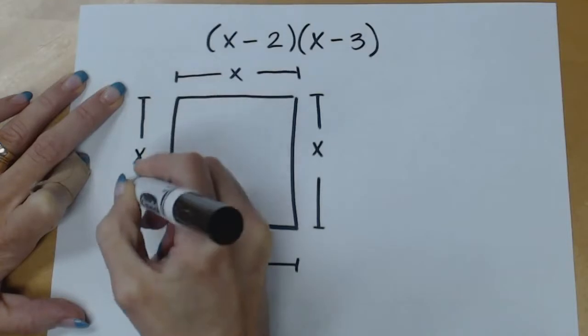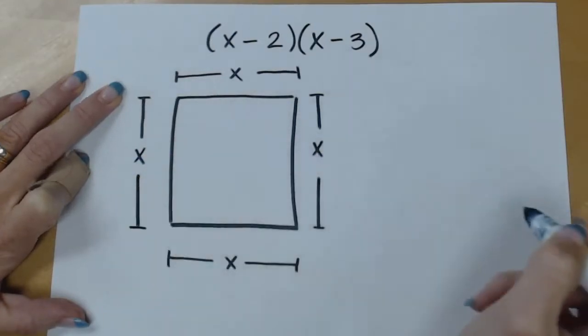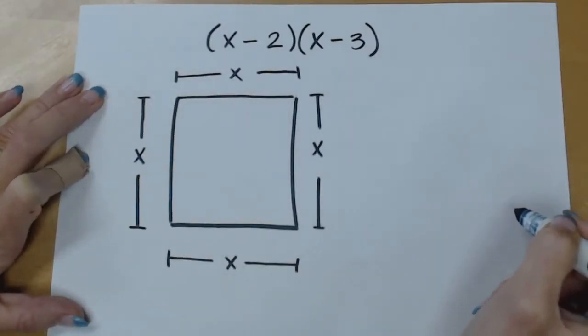My hope is that all of you will know that the area of the black square now is going to be x squared.